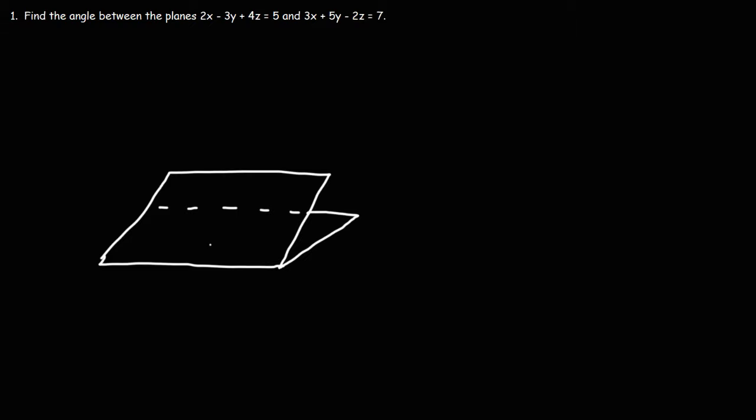And then let's say this is the normal vector of the first plane, let's call that N1. And here we have the normal vector of the second plane, N2. So this angle, that's the angle between the two planes, that's theta, which is the same angle here.